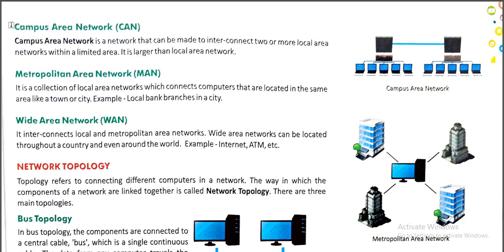Next is CAN — Campus Area Network. A Campus Area Network is a network that can be made to interconnect two or more Local Area Networks within a limited area. It is larger than a LAN. The area wider than LAN is called the Campus Area Network.